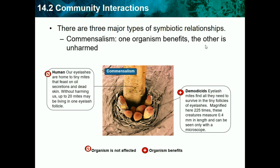Commensalism is when one organism benefits and the other is unharmed. Our eyelashes, for instance, are home to tiny mites that feast on oil secretions and dead skin without harming us — up to 20 mites can live in one eyelash follicle. These eyelash mites find everything they need to survive there, measuring 0.4 mm in length and visible only under a microscope. They benefit, but we are not harmed.